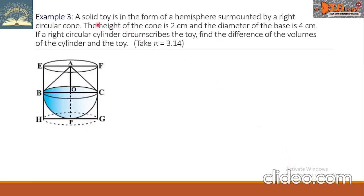Example 3. A solid toy is in the form of a hemisphere surmounted by a right circular cone. The height of the cone is 2 cm and the diameter of the base is 4 cm. If a right circular cylinder circumscribes the toy, find the difference of the volumes of the cylinder and the toy. Take pi equals 3.14.